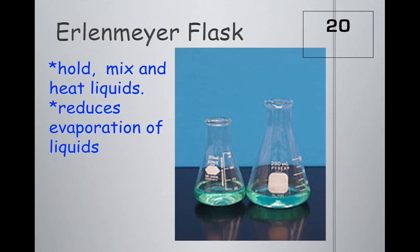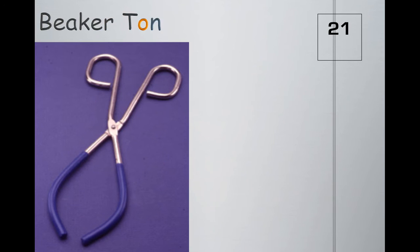Here's another glass tool called an Erlenmeyer flask. It holds, mixes, and heats liquids. Notice the opening at the top is much smaller than the beakers we just saw in slide 19. This allows for less evaporation of the liquid when heating, and it can also be sealed - we could put a cork here for sealing the flask.